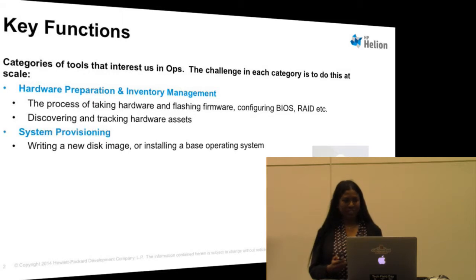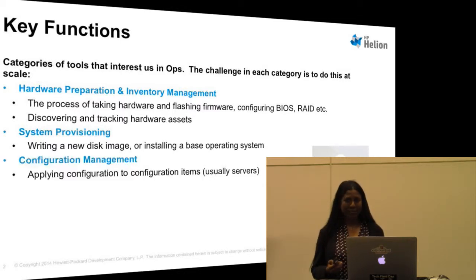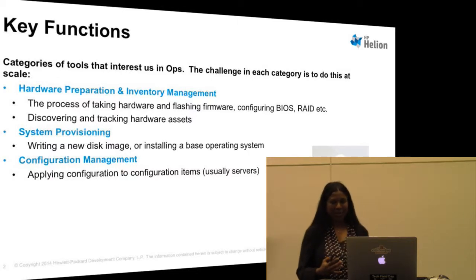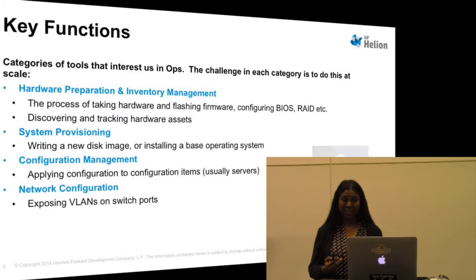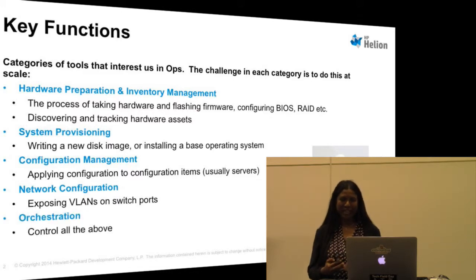Next comes system provisioning, which is basically putting a base OS on those newly arrived machines. Next is config management, which in the case of OpenStack is about what services you're deploying and what configuration goes along with those services — for example, in the case of Swift, what's the ring file configuration. Then there's network configuration, which is setting up the VLANs for your services. And then orchestration, which is the process of automating and orchestrating all these above functions.